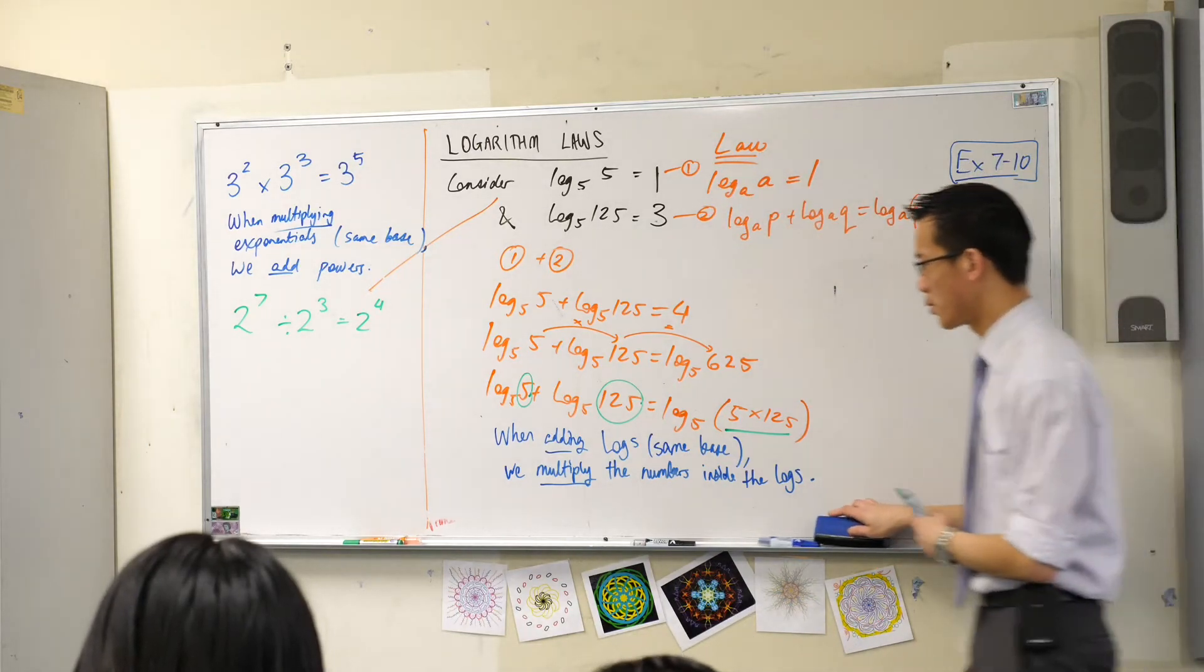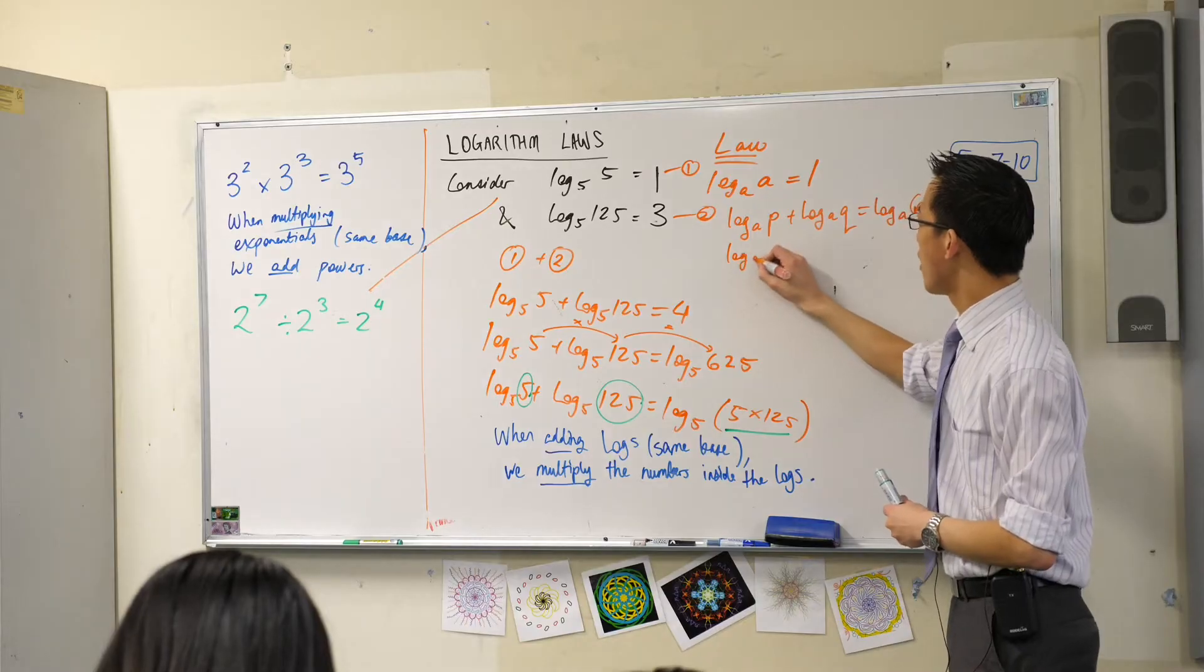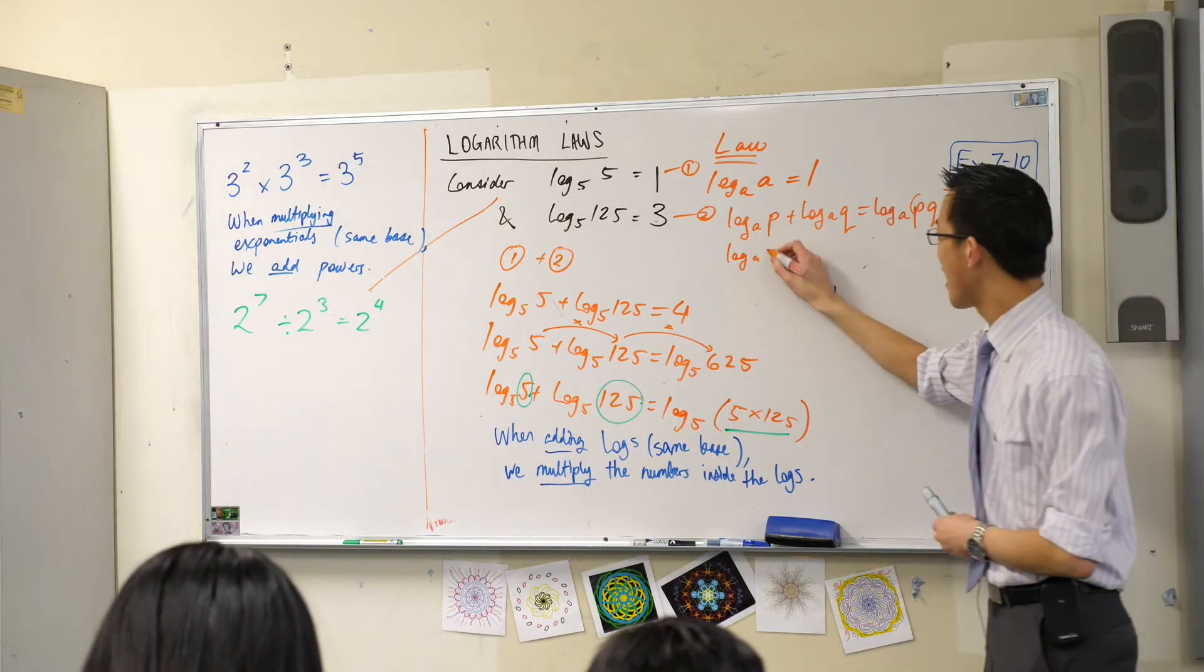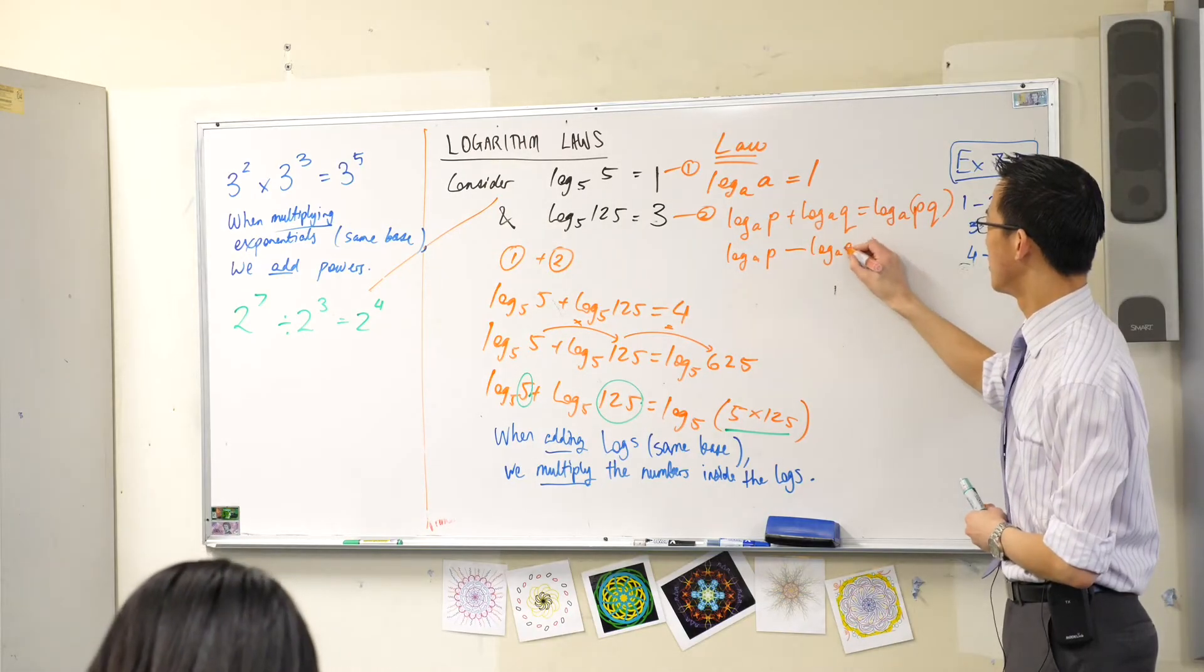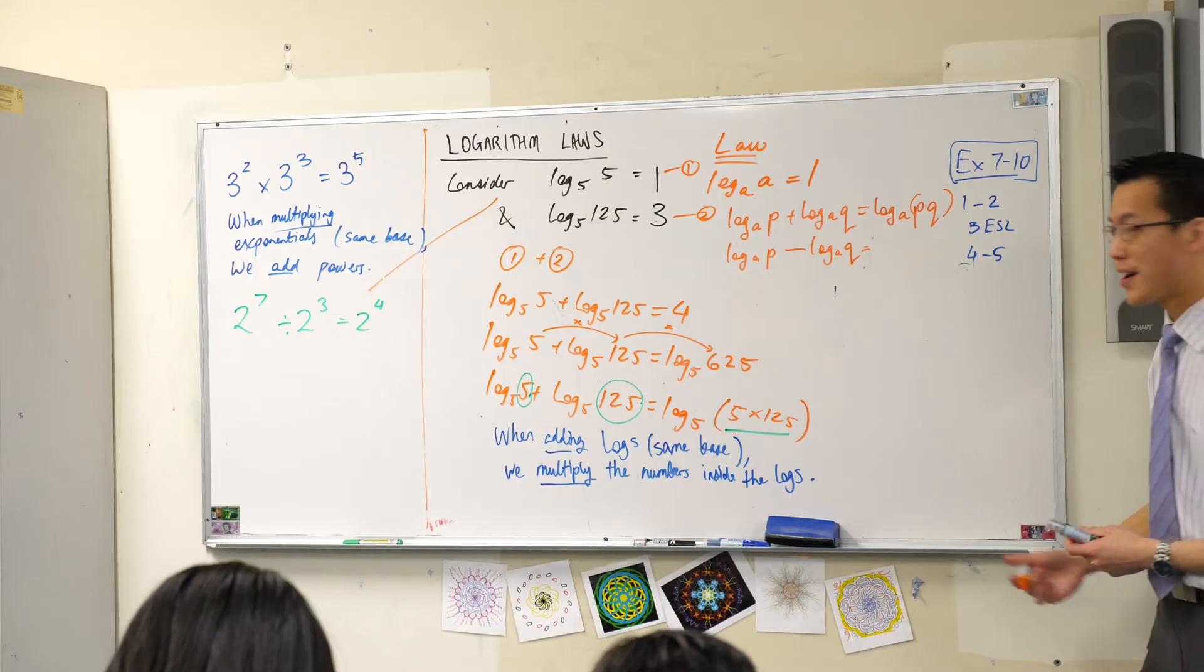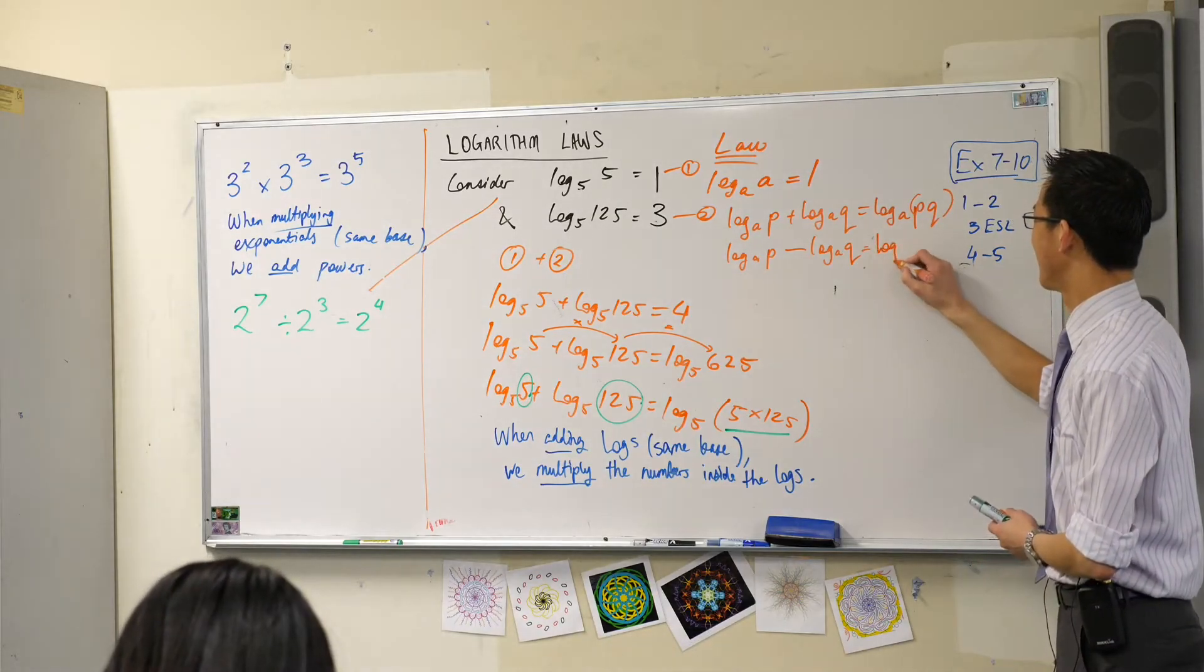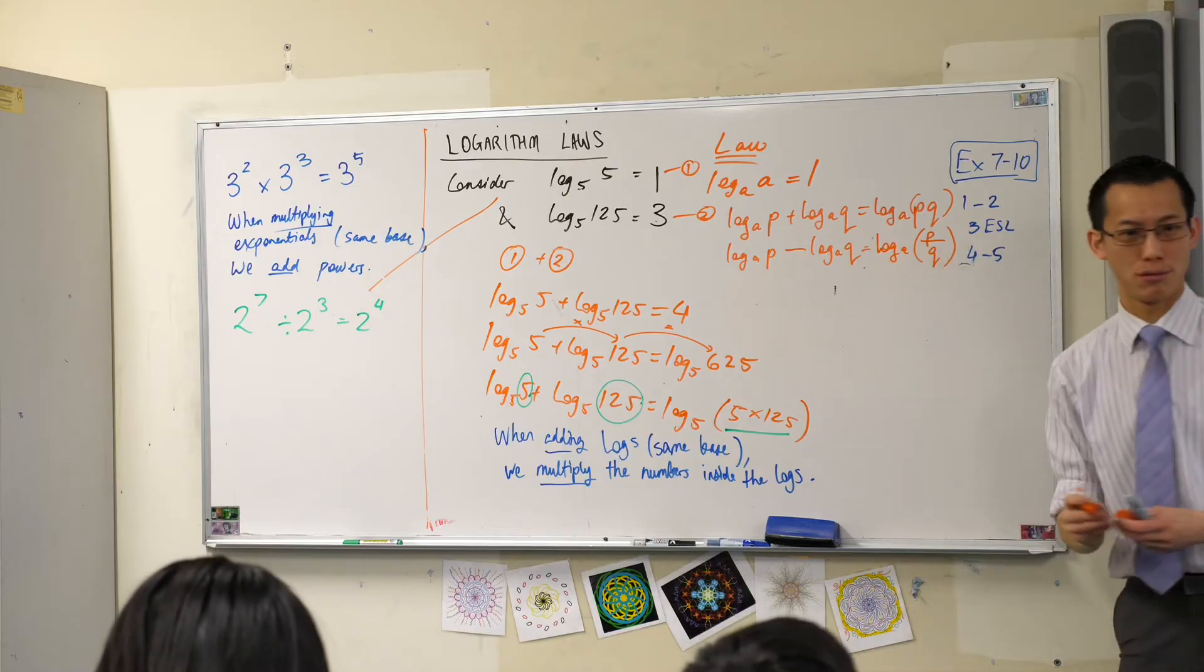Again, so I'm going to put this under the heading of laws. If instead of adding these logs, I am subtracting them, I'm not going to multiply. I'll do the opposite. I will divide. Bless you. P divided by Q, okay?